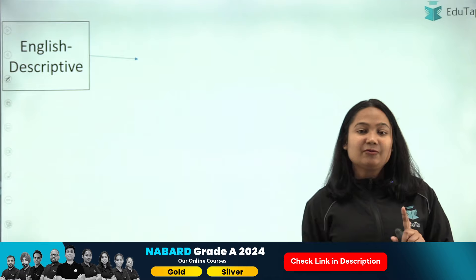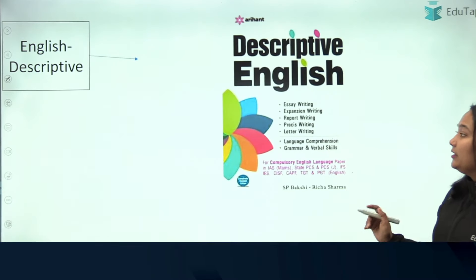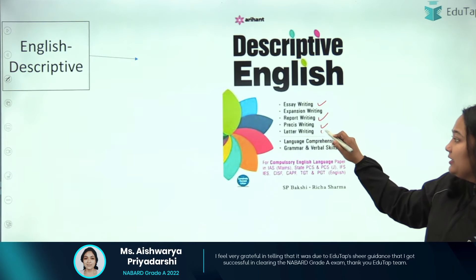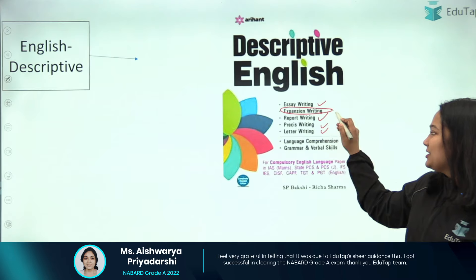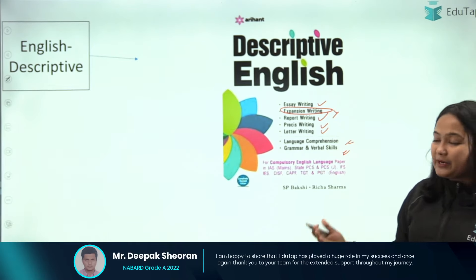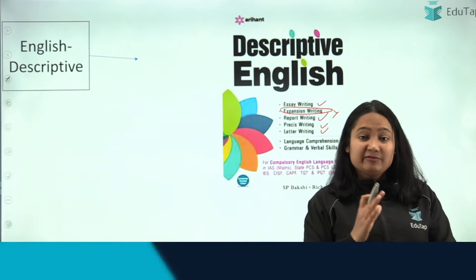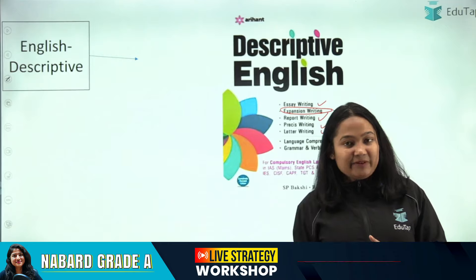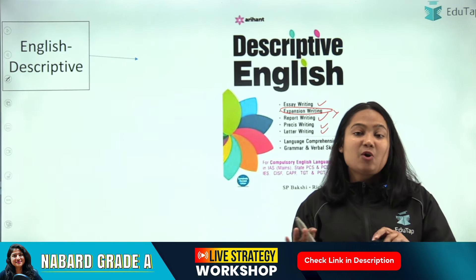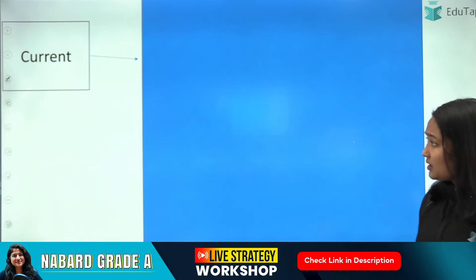For the descriptive part, to build the basics you can refer to Arihant's Descriptive English book. Here you will get essays explained, reports explained, precis explained, and letters explained — you don't need to go into expansions. The major part will be covered here. Verbal skill and language comprehension practice will also be available. However, only focusing on this book will not suffice the demands of the examination — you'll need additional preparation from your own end.